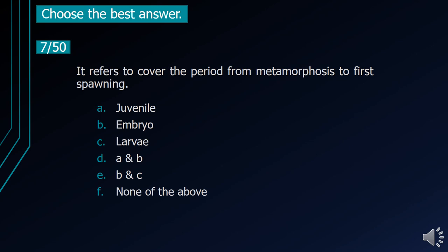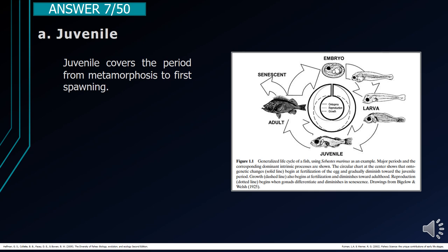Number 7. It refers to the period from metamorphosis to first spawning. A. Juvenile. B. Embryo. C. Larva. D. A and B. E. B and C. F. None of the above. The correct answer is letter A, Juvenile. Juvenile covers the period from metamorphosis to first spawning.